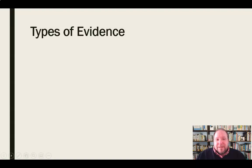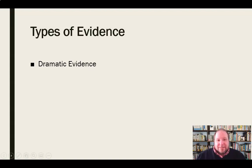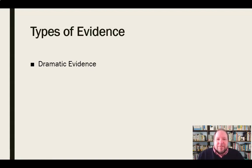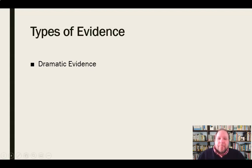First, let's take a look at evidence by examining the different types of evidence we can have. The first category is what we call dramatic evidence. By dramatic, we don't mean cinematic drama or the drama of reality TV. We're talking about drama in the sense of telling a story. We are storytelling creatures by nature — we are compelled by stories, we are persuaded by stories. So dramatic evidence has to do with telling that story or somehow conveying that story to the audience.